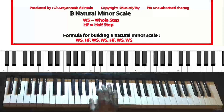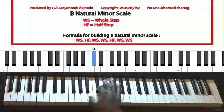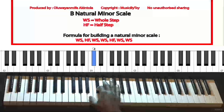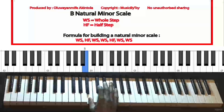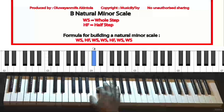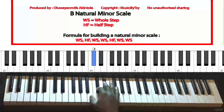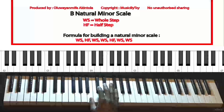Whenever you move from one key to another key and you skip a key in between, that means you've moved by a whole step. For example, if I move from the key of B to the key of C sharp, I've skipped the key of C in between — therefore I've moved by a whole step. I'm defining these terms because we're going to be using them while constructing the B natural minor scale through the formula.